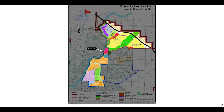Currently, the Mewasin Trail on the west bank goes through the chemical buffer, which it shouldn't, and that has yet to be addressed. So we need to start planning ahead for the east bank connections on the Mewasin Trail to make sure that we don't, again, go through the chemical buffer.